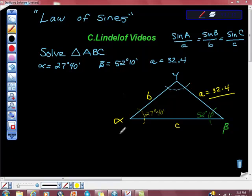Law of Sines. So we know what Law of Sines is, and what we're going to do is try to apply that. The problem we're going to do right now is kind of interesting because we're asked to solve this triangle ABC, and we're given that alpha is 27 degrees, 40 minutes.